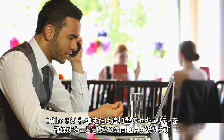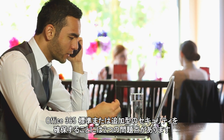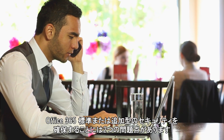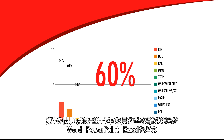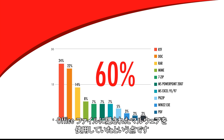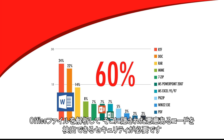There are two challenges with relying solely on the built-in security in Office 365. First, 60 percent of targeted attacks in 2014 used malware hidden inside common Office file formats like Word, PowerPoint, and Excel. You need security which can dissect Office files to discover hidden malicious code.